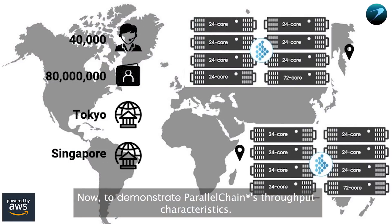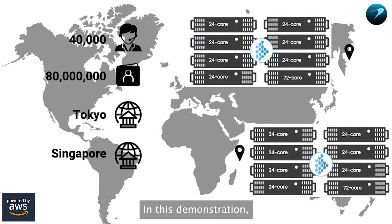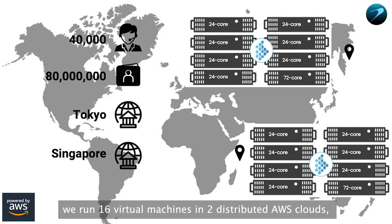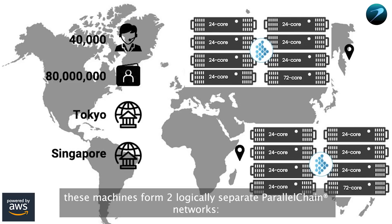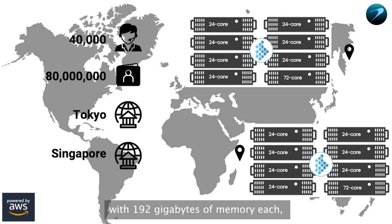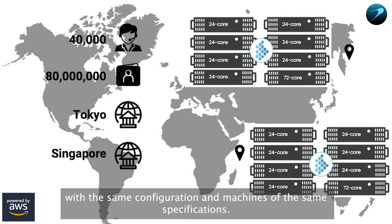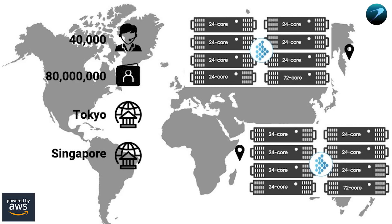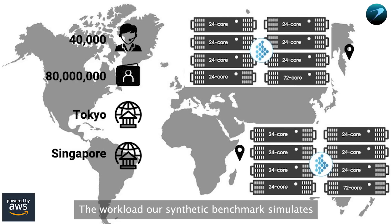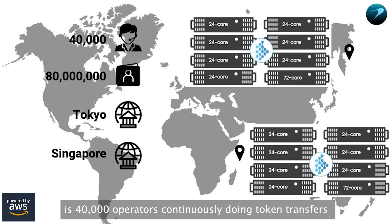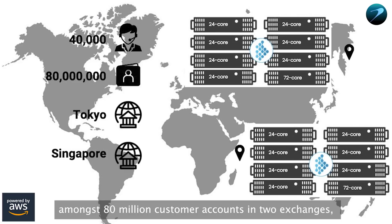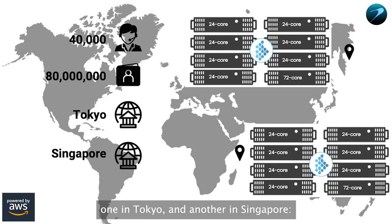Now to demonstrate parallel chain's throughput characteristics. In this demonstration, we run 16 virtual machines in two distributed Amazon Web Service clouds. These machines form two logically separate parallel chain networks: parallel chain 1 in Tokyo with 7 24-virtual-core machines with 192 gigabytes of memory each and 1 72-virtual-core machine with 144 gigabytes of memory, and parallel chain 2 in Singapore with the same configuration. The workload our synthetic benchmark simulates is 40,000 operators continuously doing token transfers amongst 80 million customer accounts in two exchanges, one in Tokyo and another in Singapore.